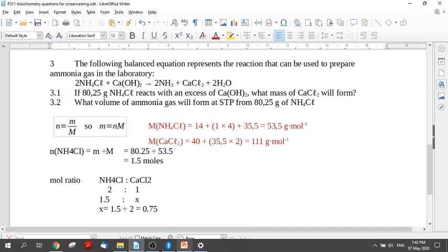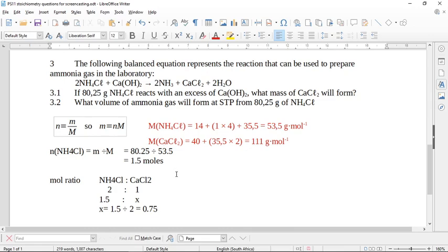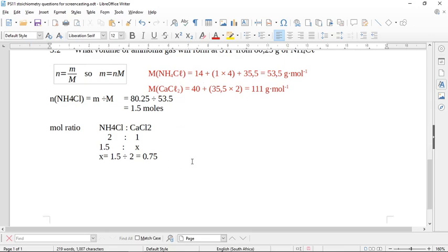So now we've found the number of moles of calcium chloride. Now what we need to do is find its mass. So in order to find its mass, we need to know its relative molecular mass. And then we know from here M equals NM. M equals NM. Write the formula every time. 0.75 times 111.